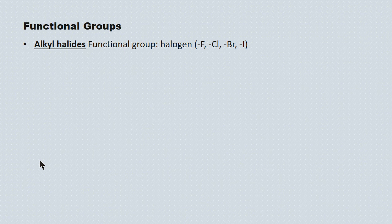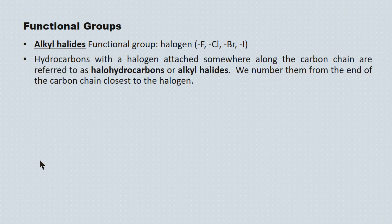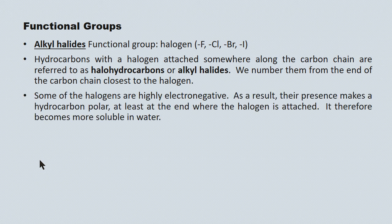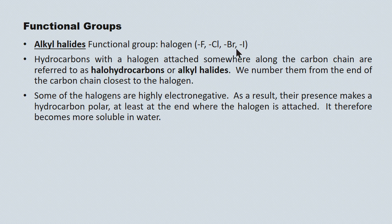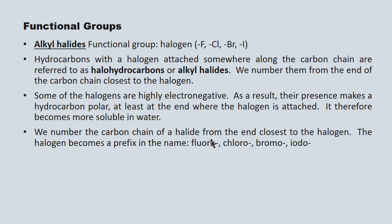Alkyl halides have a halogen as a functional group — a group 17 element: fluorine, chlorine, bromine, or iodine. They're numbered from the end closest to the halogen along the hydrocarbon backbone. Some halogens are very highly electronegative — fluorine and chlorine in particular — so these introduce polarity to the molecule and make them soluble in water. Bromine and iodine are not very electronegative, so alkyl halides that include bromine or iodine are typically insoluble in water. Halogens are identified in naming by the prefixes fluoro-, chloro-, bromo-, or iodo-.